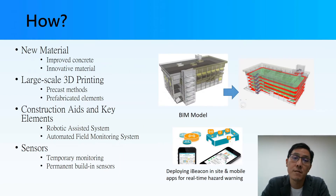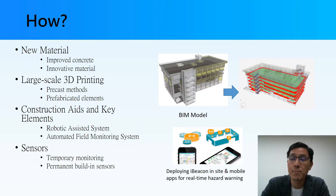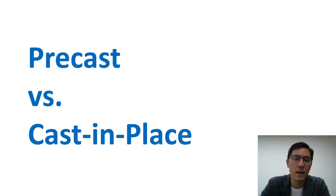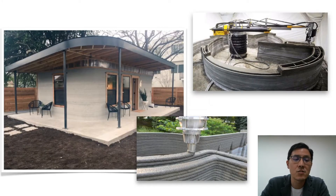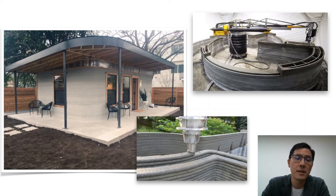So how can we achieve the goal? We can develop new materials, improve current concrete, and invent innovative materials. Another approach is to use large-scale 3D printing on site, and also develop several construction elements to help with field work. Sensors are also another tool we can apply in future constructions. We can apply 3D printing in two ways: pre-casting and cast-in-place. This slide shows examples of cast-in-place printing — you need to design the house space first, then set up a 3D printing machine that fits the building requirements, and then apply additive manufacturing to finish the job.